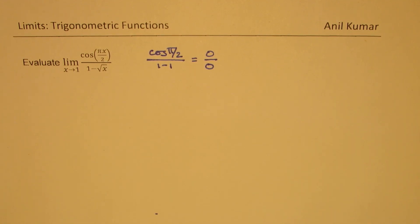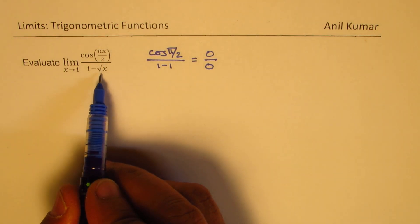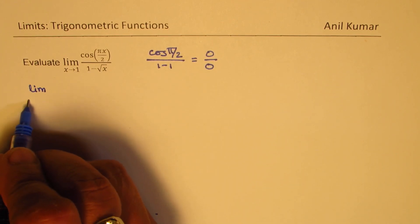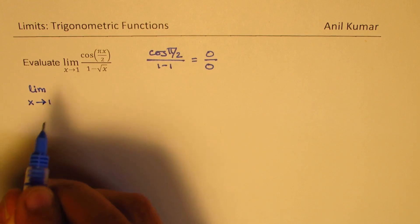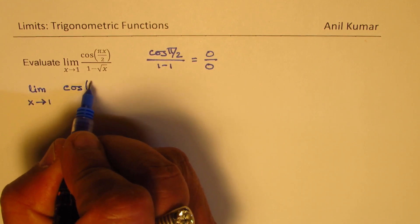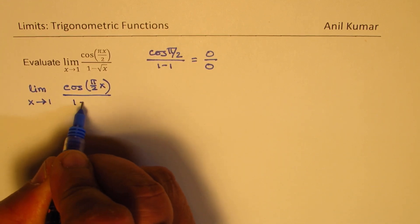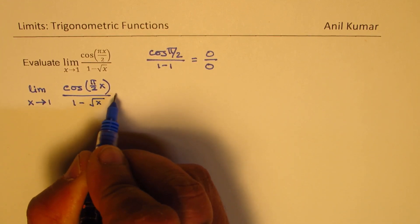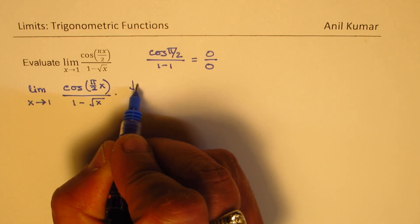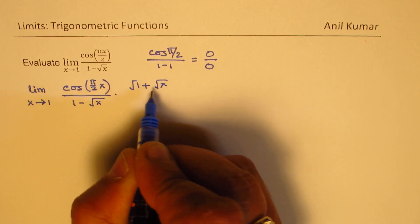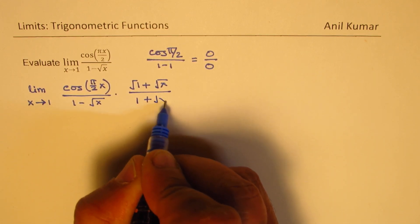Now we could solve this using substitution. But before that, let me rationalize the denominator. So limit x approaches 1, we have cos(πx/2) over 1 minus square root of x. If I rationalize by multiplying by (1 plus square root x) over (1 plus square root x).